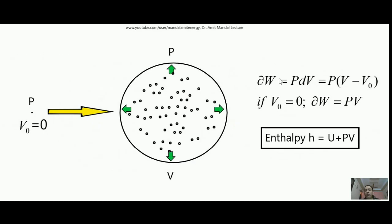We know that in thermodynamics the work done is given by p·dV, where dV is the change in volume and p is the pressure. So dV can be written as V minus V₀, where V is the final volume and V₀ is the initial volume. In case the initial volume is zero, then work done equals pV. This gas system has some volume and some pressure; we can hypothetically assume that initially it had volume zero and pressure p, and ultimately to make its own space in the environment it expanded and attained volume V. So the net work done by this gas on the surroundings will be p into (V − 0), which equals pV.